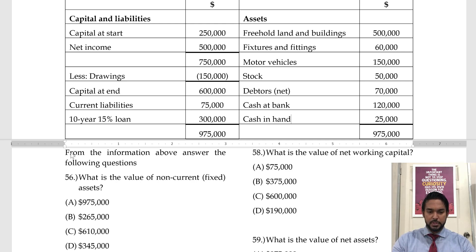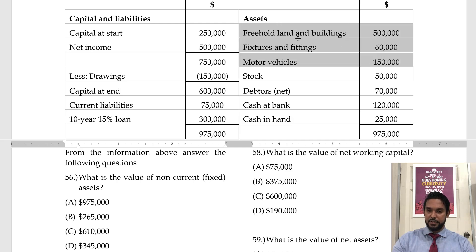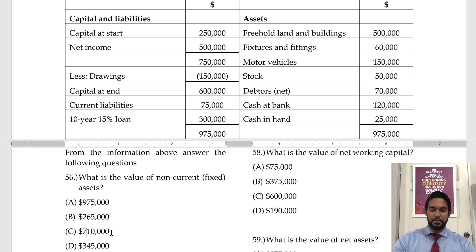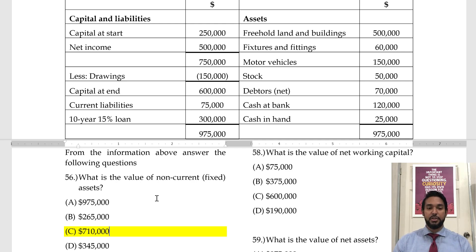From the information above, answer the following questions. What is the value of non-current or fixed assets? We're going to take freehold land and buildings, fixtures and fittings, and motor vehicles. Stock, debtors, bank and cash are all current assets. 560,000 plus 60,000 is 620, plus 150 is 770 — wait, let me double check the arithmetic: 60 and 150 is 210, plus 500 is 710. So non-current assets total 710,000.